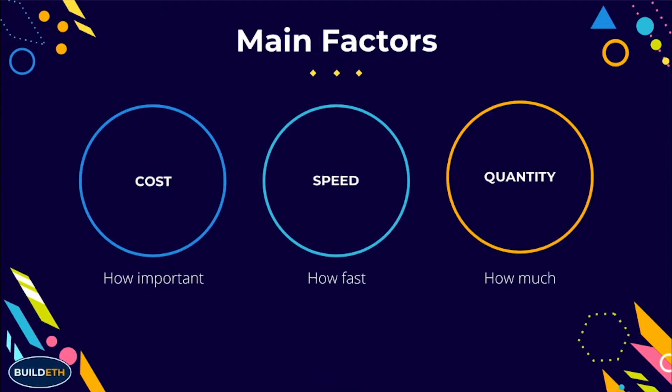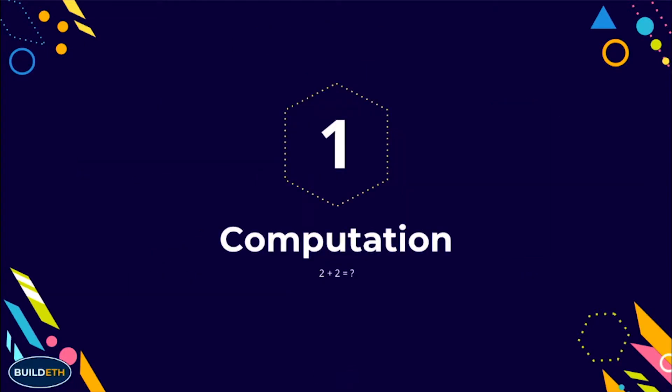These are the three main factors to consider when designing a workflow or a particular function: cost — not in terms of gas, but how important is this function or data; speed — how fast do we need this; and quantity — how much of this data do we have? This splits up into two main categories: everything in a smart contract either falls into computation or storage.